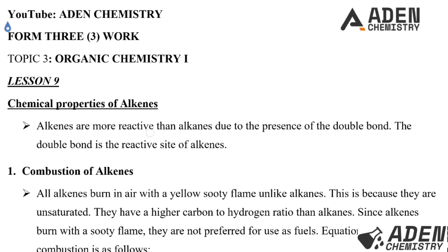Alkenes are more reactive than alkanes, and that is due to the presence of the double bond. When dealing with alkanes, we have only a single bond between two carbon atoms. But when dealing with alkenes, we have at least a double bond between two carbon atoms in a molecule. Therefore, the double bond is the reactive site of alkenes.